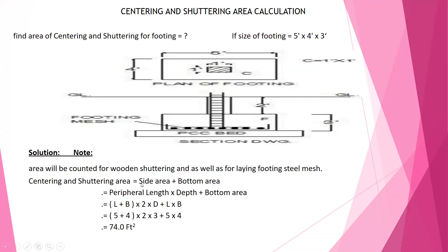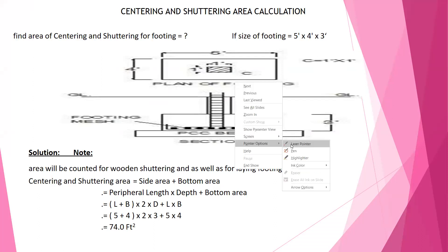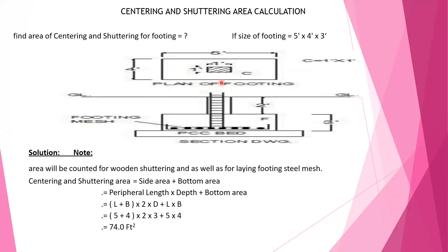Shuttering area will be the side area. Side area — that is length and breadth multiplied by 2 — will give you the shuttering area. That means 5 feet by 4 feet, all multiplied by 2, into 3 plus 5 into 4, that is 740 square feet of area. That is inclusive of the bottom area.